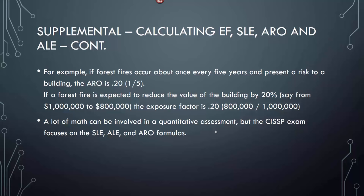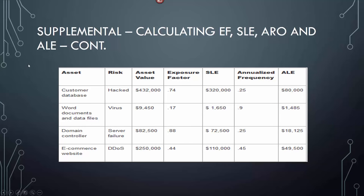The CISSP exam focuses on SLE, ALE, and ARO formulas — that's all they focus on. Maybe one or two questions will be something like 'should you buy insurance?' Well, if the insurance is more than the actual expected loss (the ALE — annual loss expectancy), then you shouldn't buy it. Pay real close attention to those. If a customer database is hacked and the asset value is $432K with an exposure value of 0.74, the SLE is $320K, annualized frequency is 0.25, and the ALE ends up being $80K. Go through these with the formulas from the previous slides.